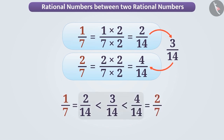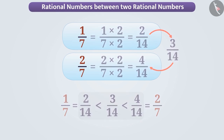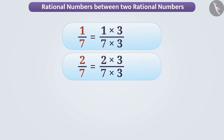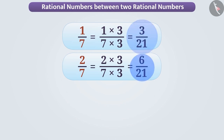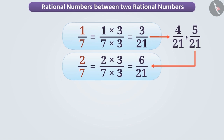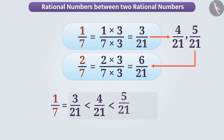Similarly, if we multiply both the numerator and the denominator of both rational numbers by three, then we get their equivalent rational numbers three by twenty-one and six by twenty-one. Now the rational numbers between these two are four by twenty-one and five by twenty-one, where three by twenty-one is smaller than four by twenty-one, four by twenty-one is smaller than five by twenty-one, and five by twenty-one is smaller than six by twenty-one.